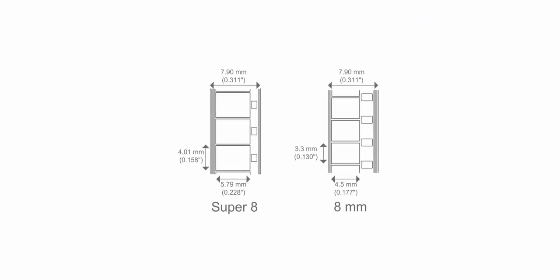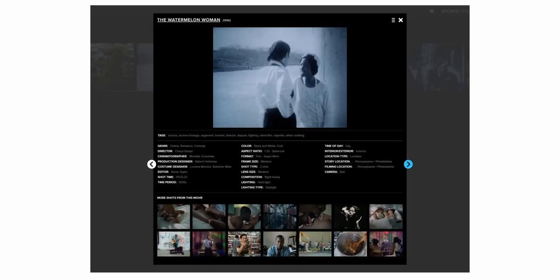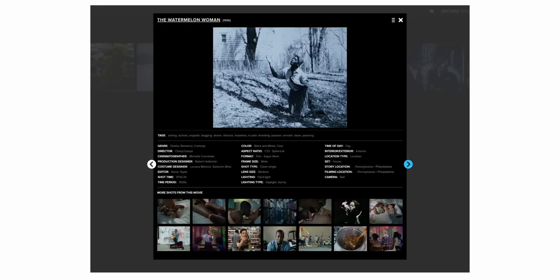Simply put, the sizes are the size of the film. For example, in a 16mm stock, the film frame is 16mm wide. But to get more into it, we need to start at 8mm film.